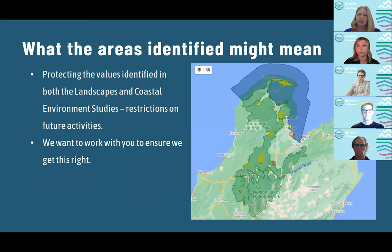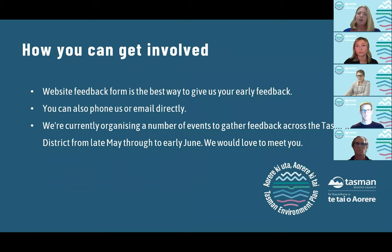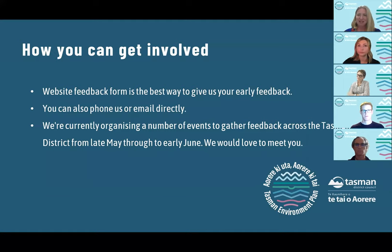Typical kinds of rules for these types of areas include things like major earthworks — stopping major changes to the land both physically and visually. Big scars on the landscape, such as tracks across hillsides, have a real impact on landscape values. There are also rules to control the scale and location of buildings so that they're not visually prominent and damaging visual qualities. We're really early in this process. We're coming out to you early so there's plenty of time to talk through where the lines sit and whether they're in the right place.